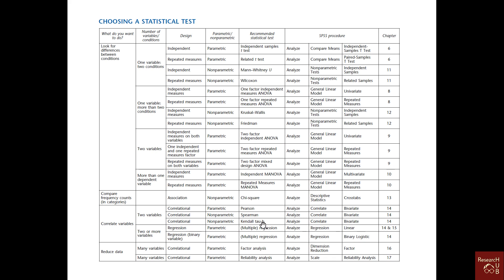For correlations between two categorical variables we use Kendall's tau. If we have two or more variables and data is normally distributed, we use multiple regression. If there are binary independent variables, we can still use multiple regression. However, if the dependent variable itself is binary, we need logistic regression — which is not shown in this chart.